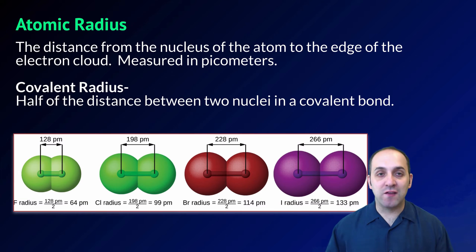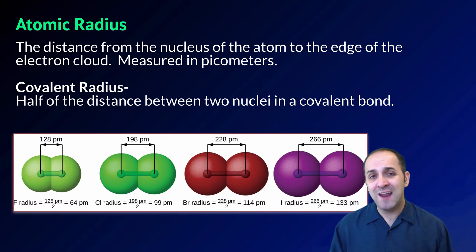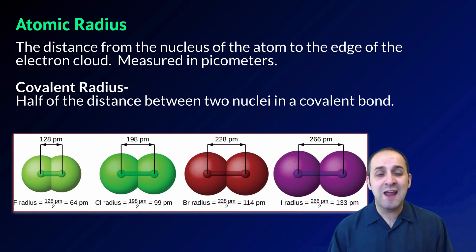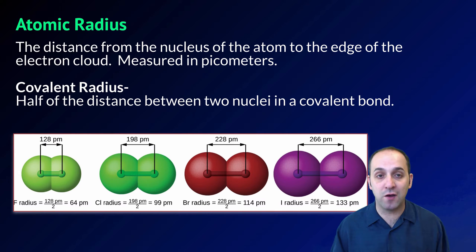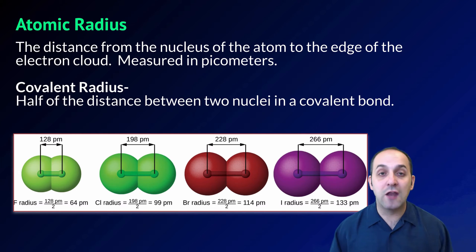Our first trend is atomic radius — the distance from the nucleus of the atom to the edge of the electron cloud. It can be very tricky to measure because of the quantum mechanical nature of the electrons. The most common way is through what's called the covalent radius, which is half of the distance between the two nuclei in a covalent bond. This is generally measured in picometers, or trillionths of a meter. Here are four different diatomic elements bound to each other, and you can see how the atomic radius was calculated for each of them.